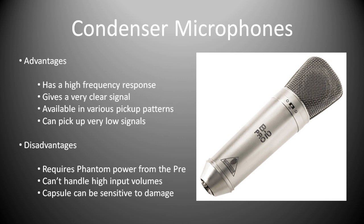The disadvantages of condenser microphones are that they require phantom power from your preamp or audio interface. In this day and age this generally isn't a problem — most interfaces and preamps have phantom power built in. However, if you're working off an older system you may have to buy a separate unit to provide the phantom power. They also can't handle very high input volumes, though the B2 Pro has a built-in pad which drops the signal down by 10 dB to stop any distortion creeping in. The capsules inside them can also be very sensitive to damage.